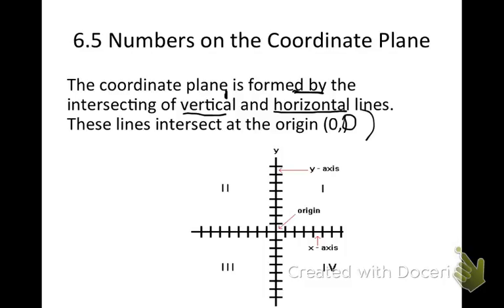If you see my coordinate plane down here, at the origin, with the y-axis and the x-axis, please label each quadrant in the coordinate plane as Roman numeral 1, Roman numeral 2, Roman numeral 3, and Roman numeral 4. Those are very important. We're going to use those later. Copy this down. If you need to pause the video, pause it. When you're ready to move on, go ahead.